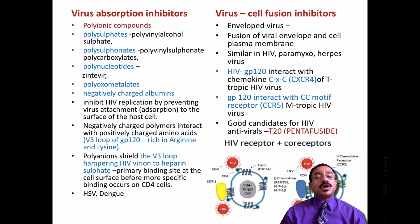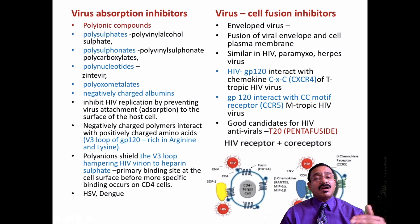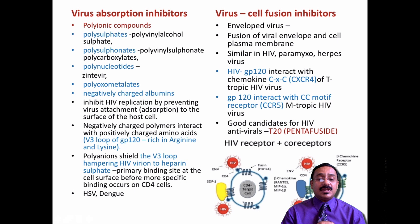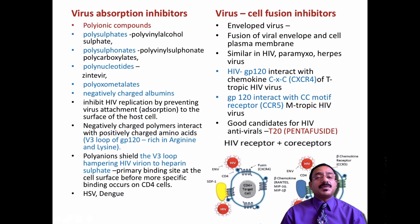Virus absorption inhibitors: the first group is polyionic compounds — poly-sulfates, poly-sulfonates, poly-nucleotides, poly-oxo-metalates, and negatively charged albumin. These are all viral absorption inhibitors. How they work: they are negatively charged polymers that interact with the positively charged amino acids in a specific area of the virus which gets attached to its ligand. They technically shield the primary binding site of the cell surface. For HIV attaching to CD4 cells, the attachment site is blocked by this polyionic shield through electrostatic repulsion. These absorption inhibitors are used in HIV, HSV, and dengue fever.